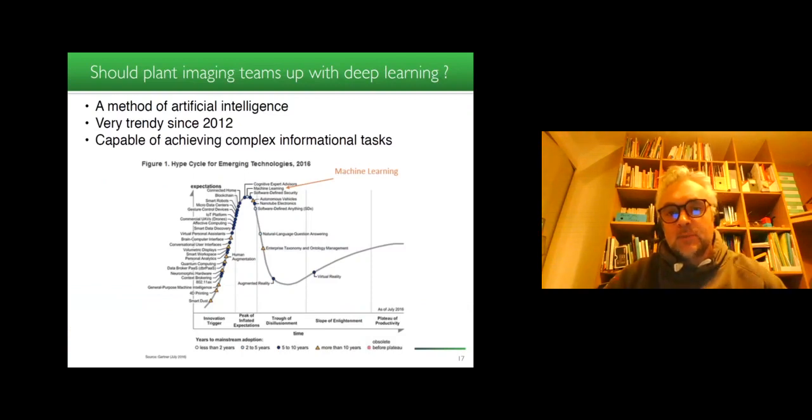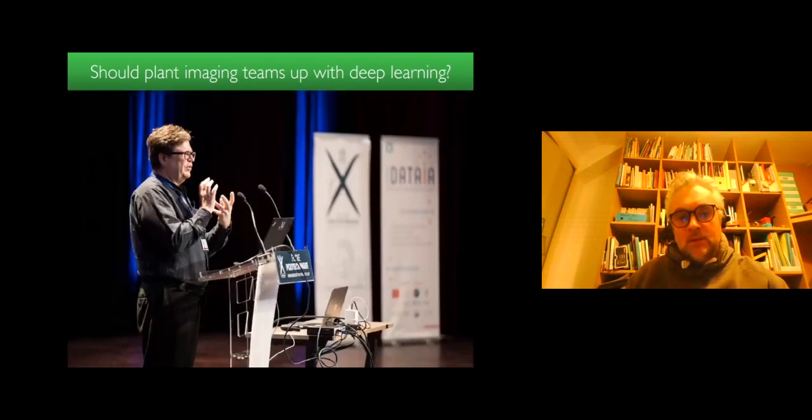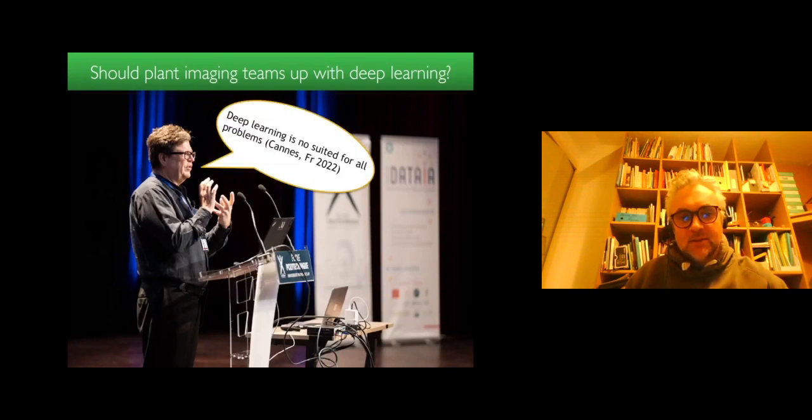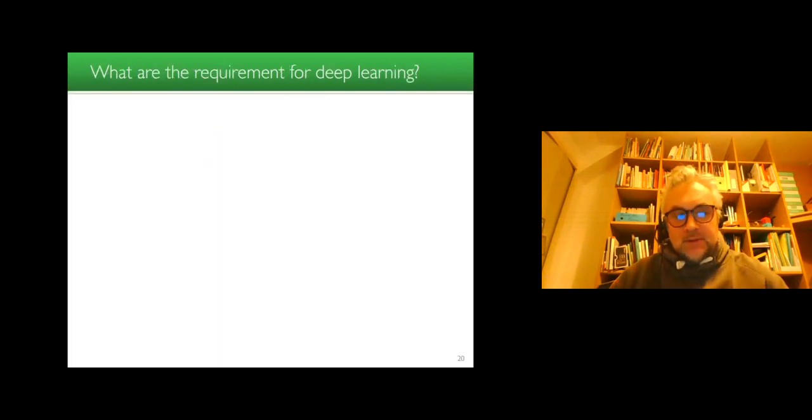So plant imaging teams up with deep learning. Actually, deep learning is a method of artificial intelligence, which is so trendy since 2012, and is capable of achieving complex information tasks in almost all domains. However, if we listen to godfathers of this domain, such as Yann Lecun, deep learning is not suited for all problems. There are some kind of requirements, and we can take time to check that indeed for plant imaging they are there.